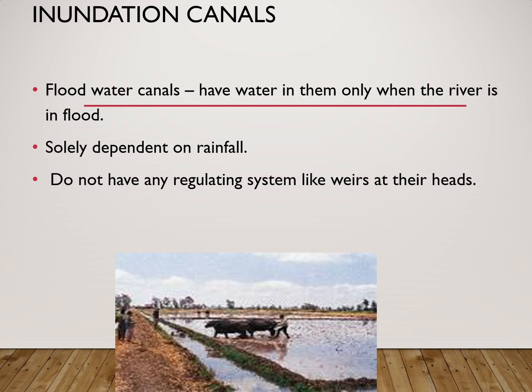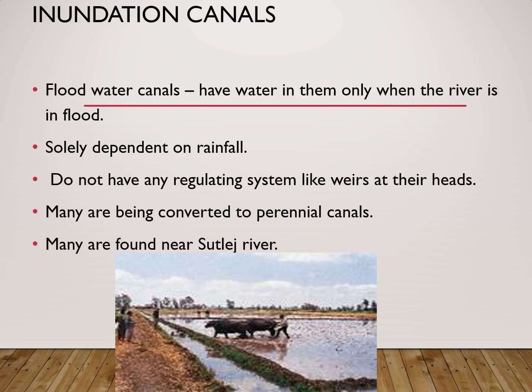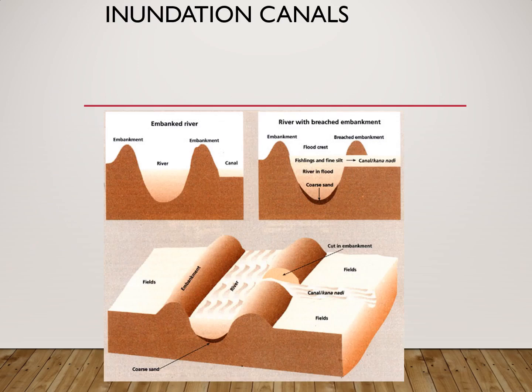These canals do not have any regulating system on their heads like weirs. Weirs are gates placed on the canal to stop and allow water to flow, so they are unregulated systems. Many of these canals are today being converted into perennial canals so that water can be made available throughout the year. Most of these canals are now found near the Satlaj river in Punjab. This is how an inundation canal used to be dug: a river flows with two embankments, a cut is made on the embankment, and when the river is in flood, water transfers into the canal and reaches nearby fields.